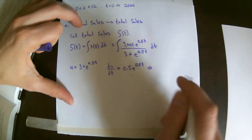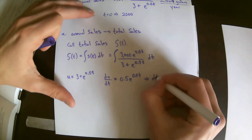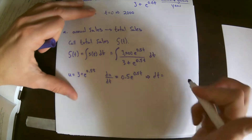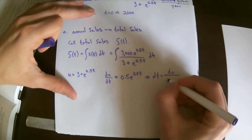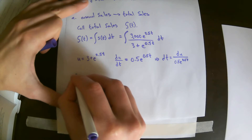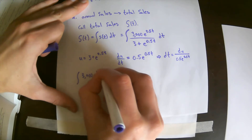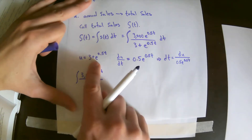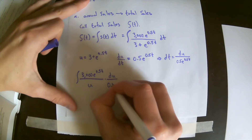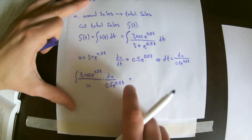So du/dt equals 0.5 e to the 0.5t. We solve for dt so we can replace it: dt equals du over 0.5 e to the 0.5t. Now we're ready to rewrite the integral as 3000 times e to the 0.5t all over u, times du over 0.5 e to the 0.5t. You can see those e terms will cancel.